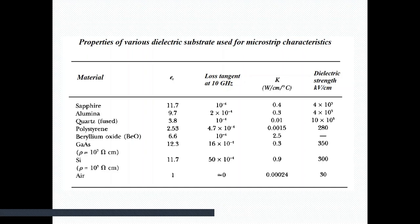The major criteria for choosing a substrate material for a microstrip transmission line are high εr and low loss tangent. In the next video, we will see the design of the microstrip transmission line and its simulation on an HFSS simulator. Thank you.